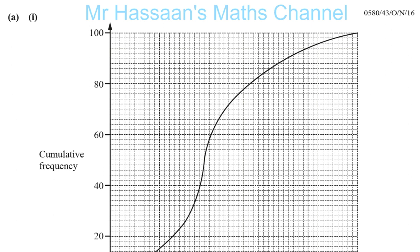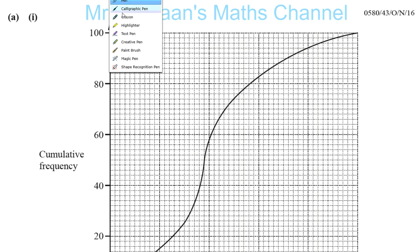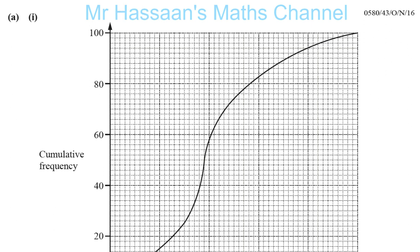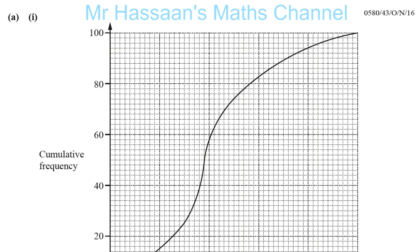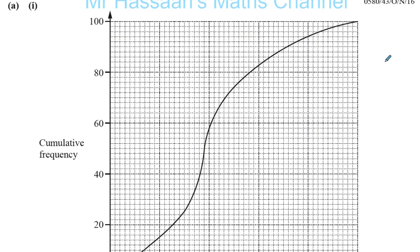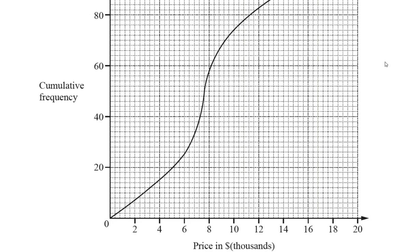Here we have a question on statistics from the November 2016 Paper 4 Variant 3. This is about cumulative frequency. There was a question about histograms in Paper 2 from June 2018, so I doubt they will have a histograms question in Paper 4 — so I'll choose a question about cumulative frequency.